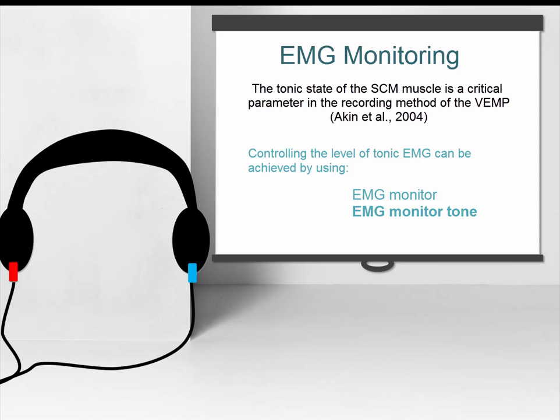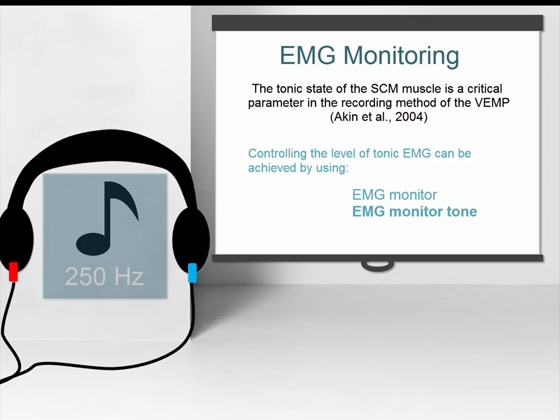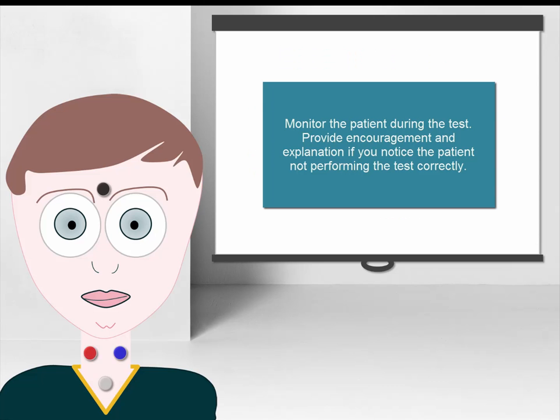Alternatively, the EMG activity can be monitored by a sound cue. A 250 Hz tone is played into the non-test ear when the muscle is not contracted sufficiently. When the muscle is contracted in the range of contraction, then the tone in the non-test ear stops and the test stimulus begins in the test ear.